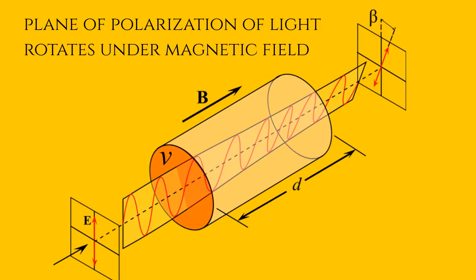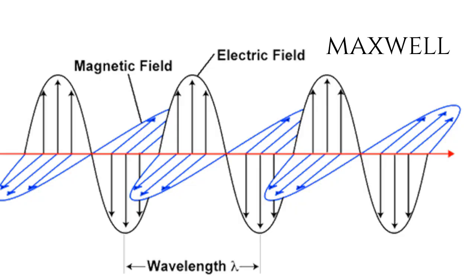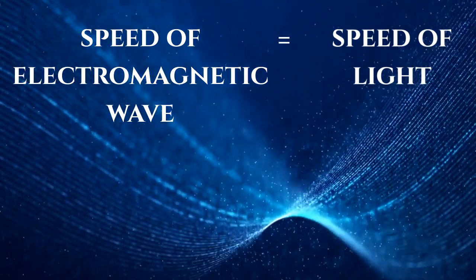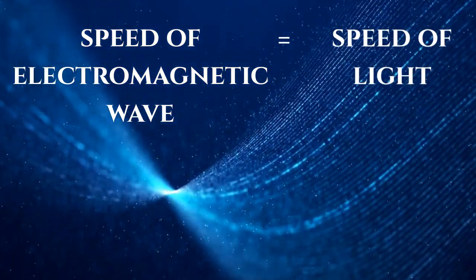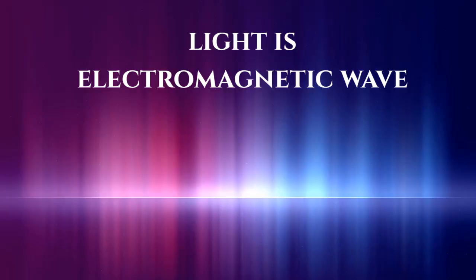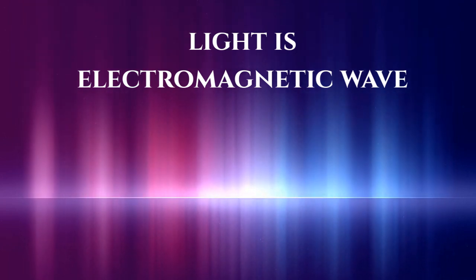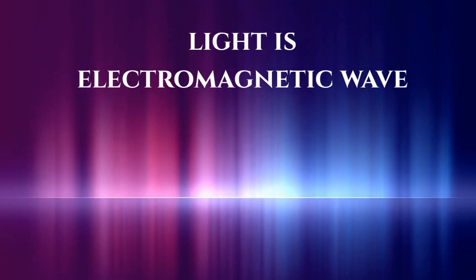Faraday further believed that electricity and magnetism may be related to light. In 1845, he was able to prove this — he noticed that the plane of polarization of light rotated when passing through a material to which a strong magnetic field was applied. James Maxwell took this further to propose an electromagnetic field in which a changing electric field continually gives rise to a changing magnetic field. Maxwell calculated the speed of an electromagnetic wave and found it was almost identical to the speed of light. Hence, light and electromagnetism were unified. Maxwell's equations predicted an infinite range of frequencies of electromagnetic waves all traveling at the speed of light, proving that light is an electromagnetic wave.